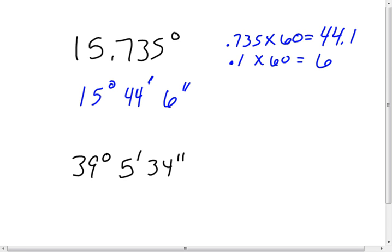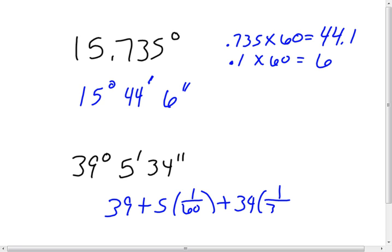Now we need to be able to go in the opposite direction. If we're given degrees, minutes, and seconds, we convert back to the angular measurement. The formula is: degrees plus (number of minutes times 1/60) plus (number of seconds times 1/3600). When you plug this into your calculator, 39 degrees, 5 minutes, and 34 seconds equals 39.093 degrees, carried out to the nearest thousandth.